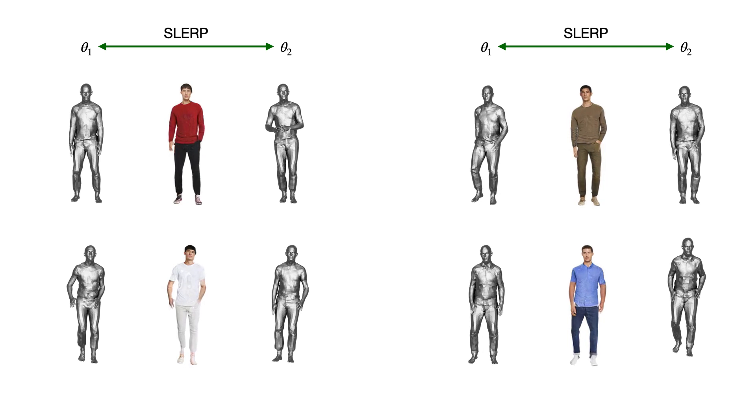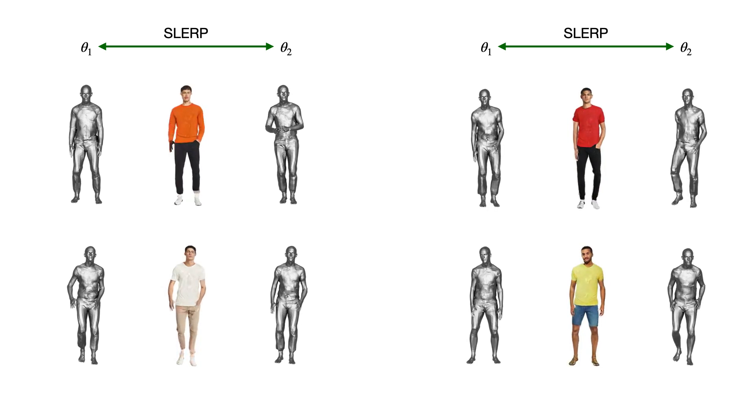Here we animate the generated textured meshes. It is done by interpolating between two different poses sampled from the data. The interpolation between two poses is done by spherical linear interpolation. The other factors are kept fixed during the animation.